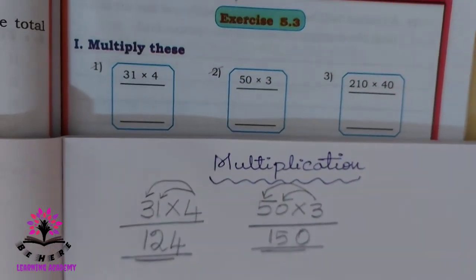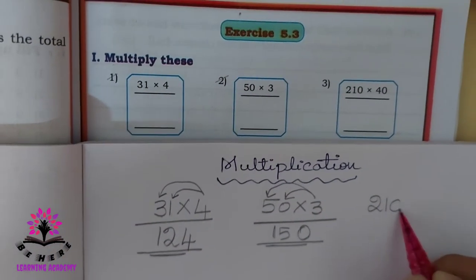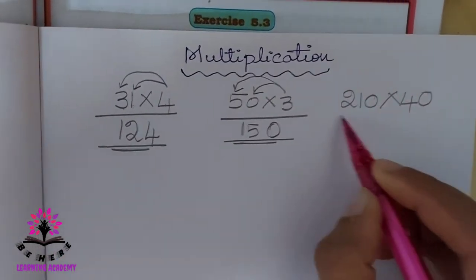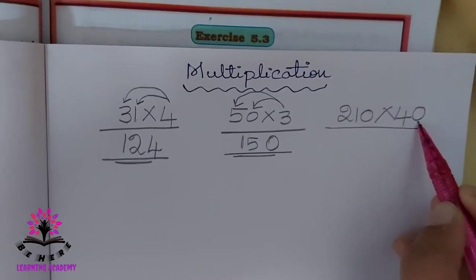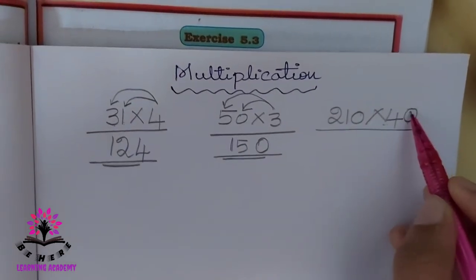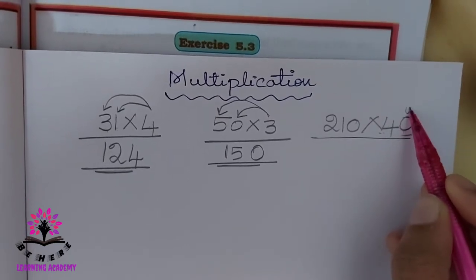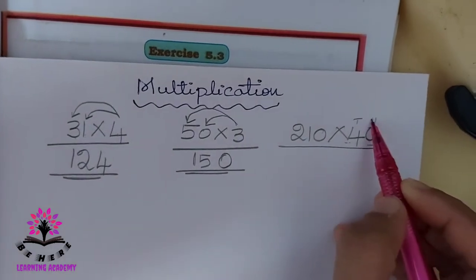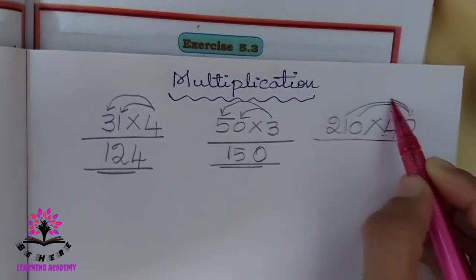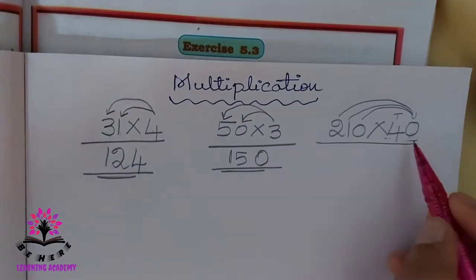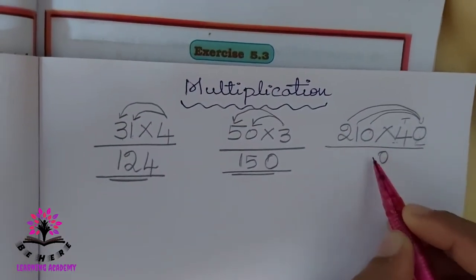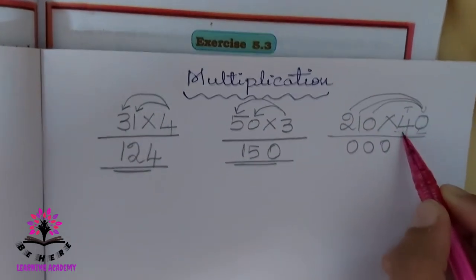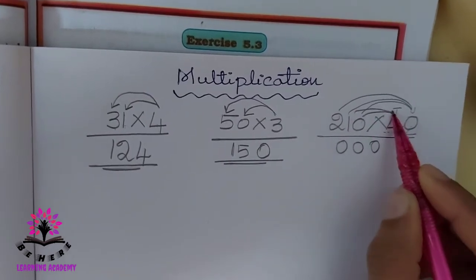Let us study the next one: 210 into 40. Here you see the two numbers — always start from the unit place. Then you have to move to the number in the tens place. First you multiply by 0: 0 times 0 is 0, 0 times 1 is 0, 0 times 2 is 0. Then multiply by 4.